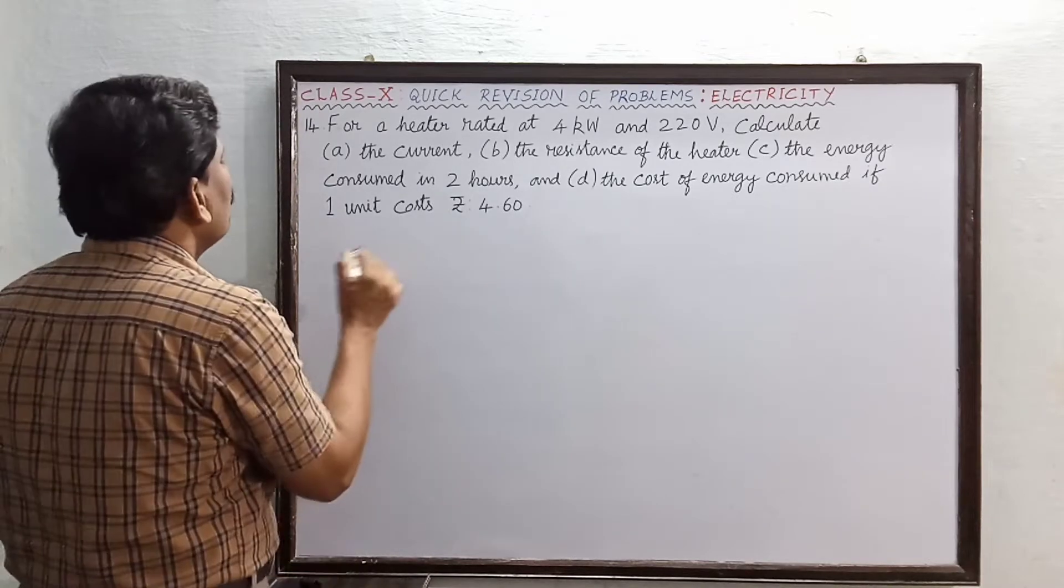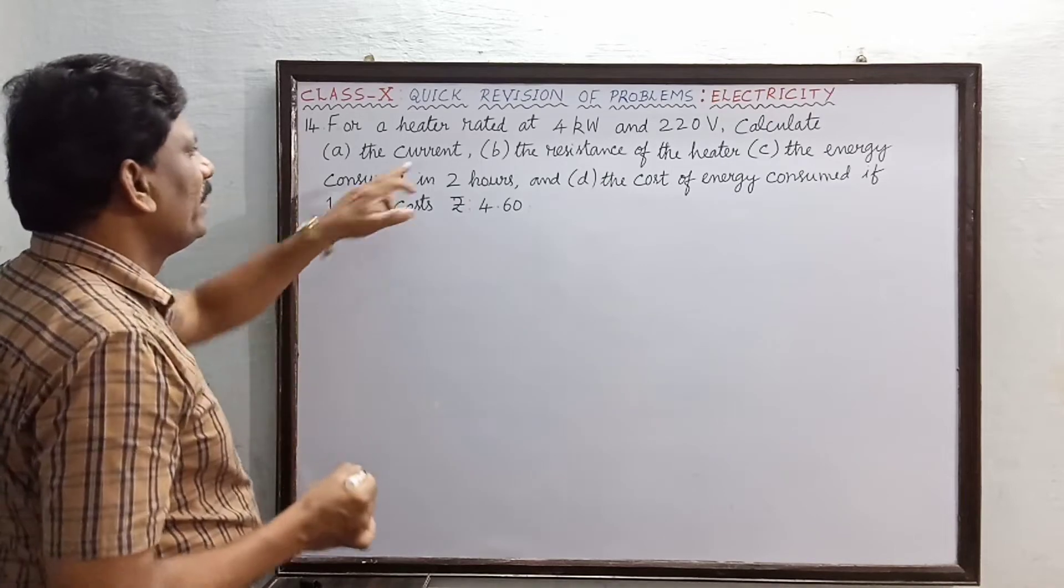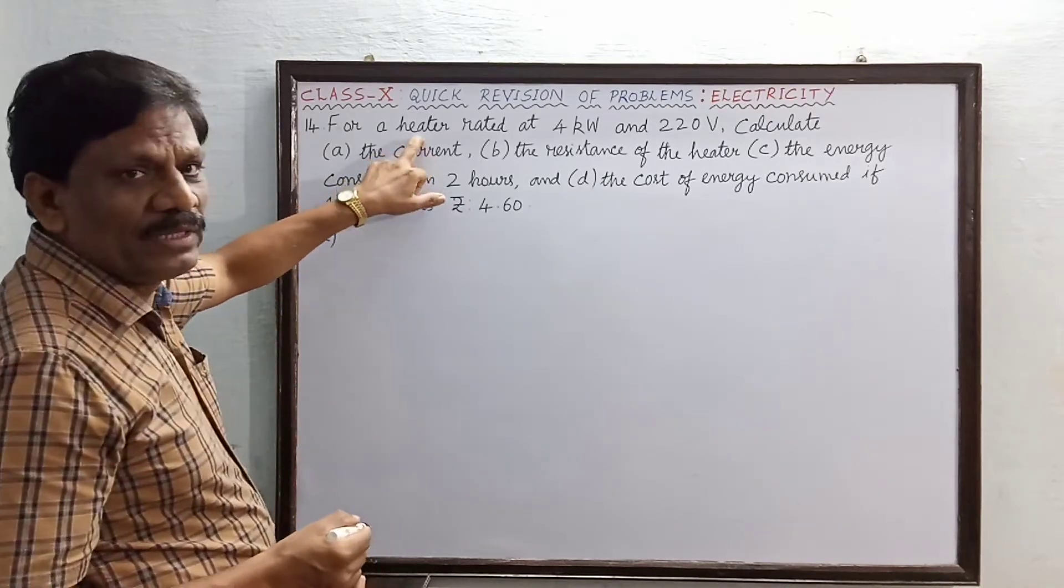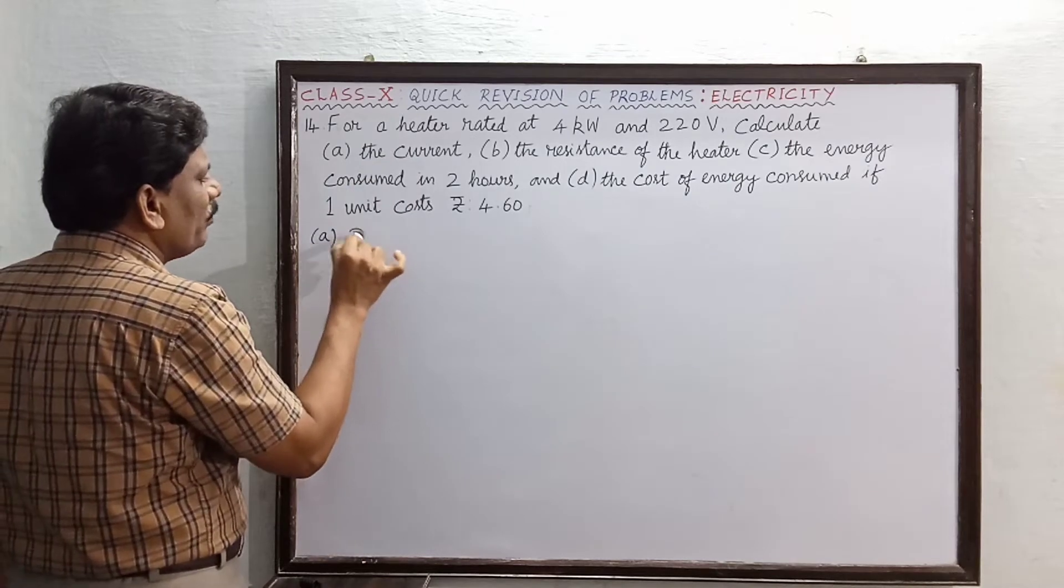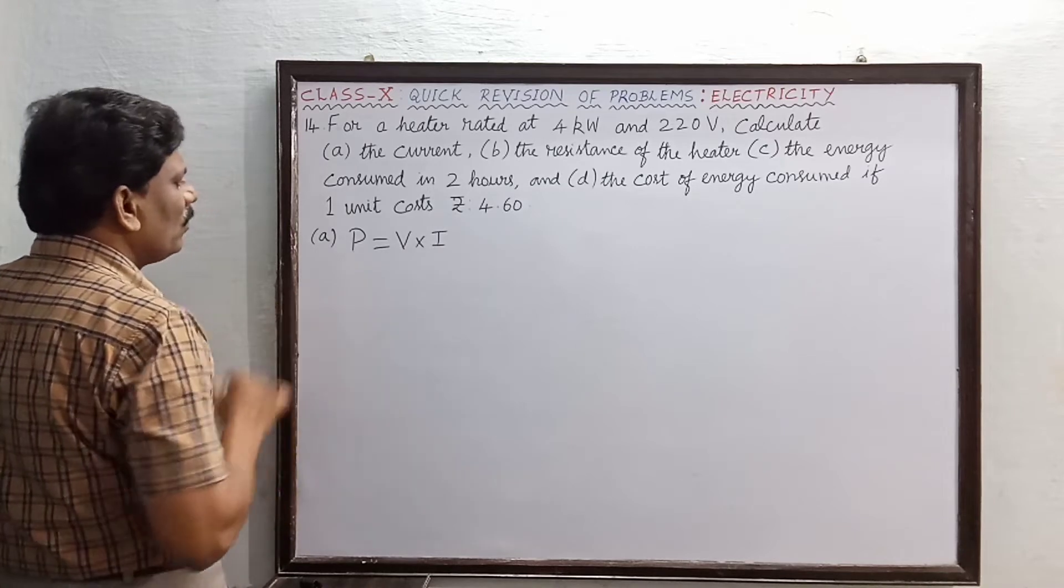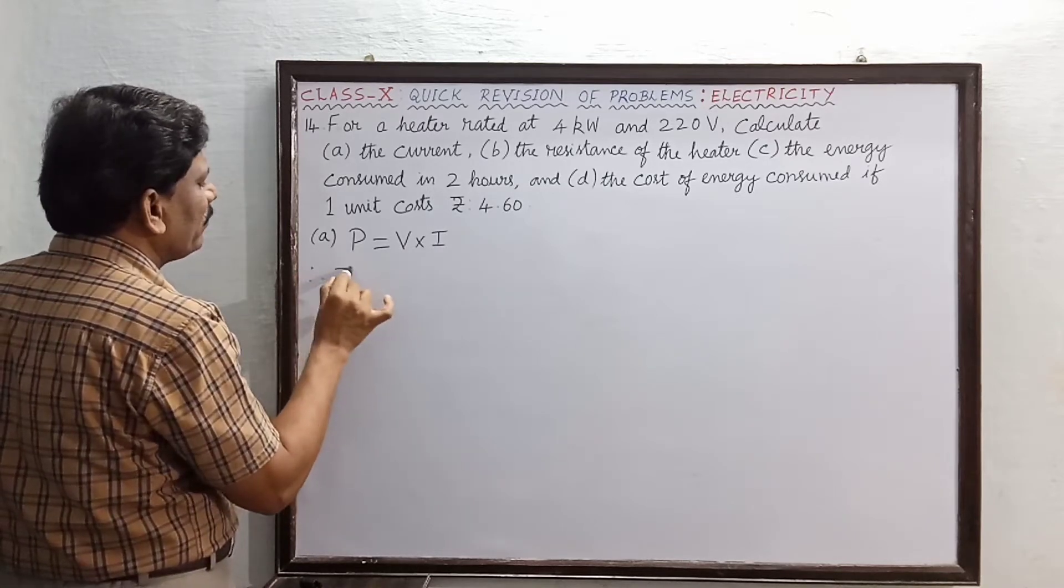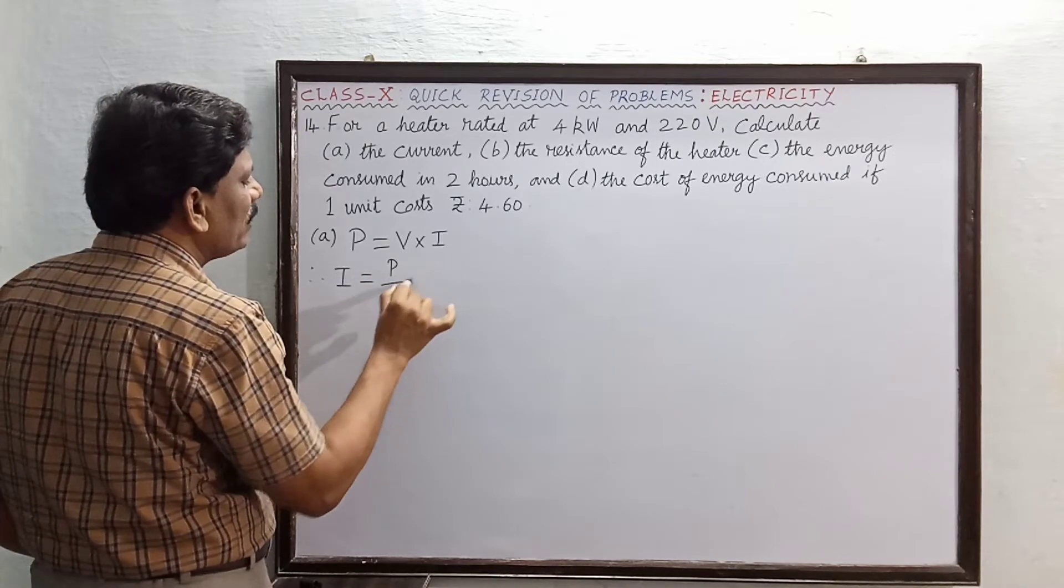Subdivision A. What is the subdivision A? We have to find out the current flowing through the heater. Power P is equal to voltage into current. Therefore, current I is equal to P by V.